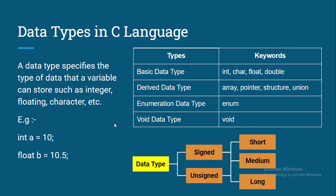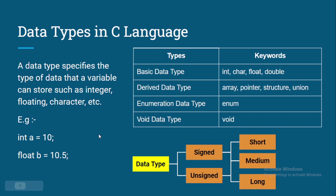So what is a data type? In simple words, a data type is a specific keyword in a programming language which represents what kind of data we are going to store into a variable. For example, we have 'int a = 10'. The keyword 'int' is an integer type which tells us that 'a' is storing integer values.